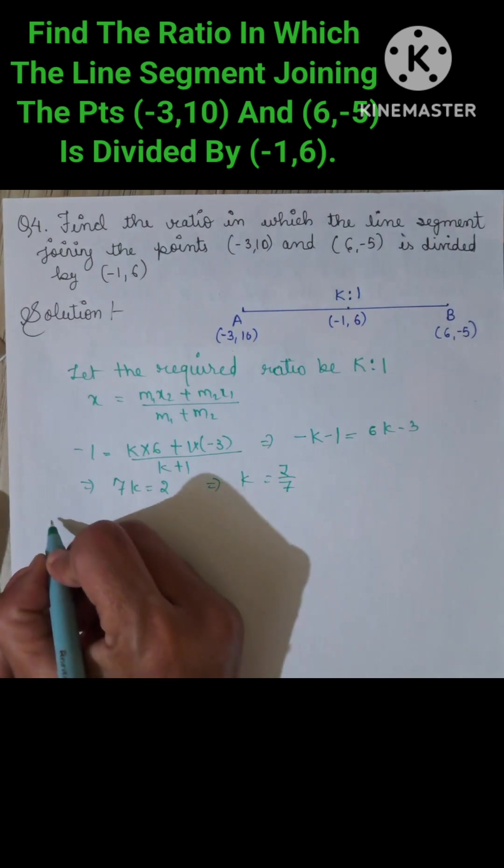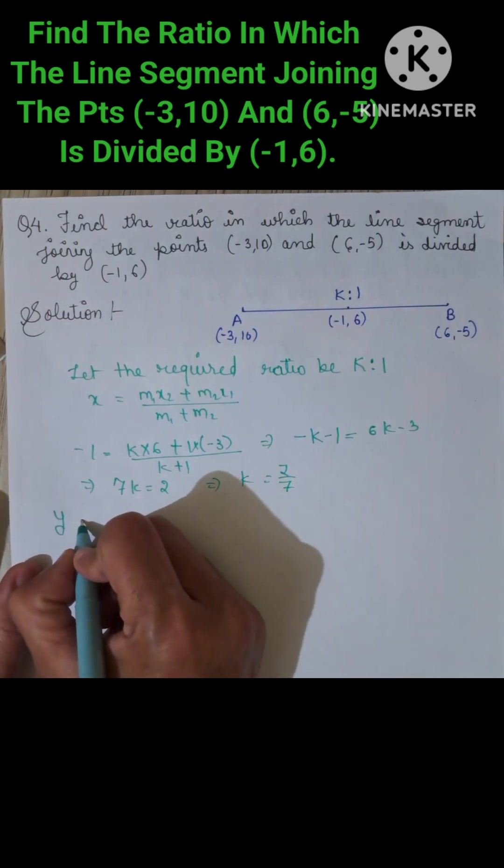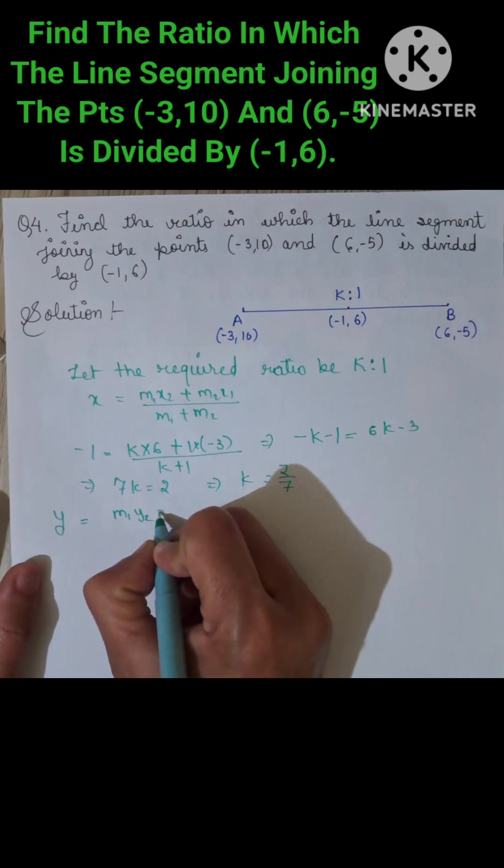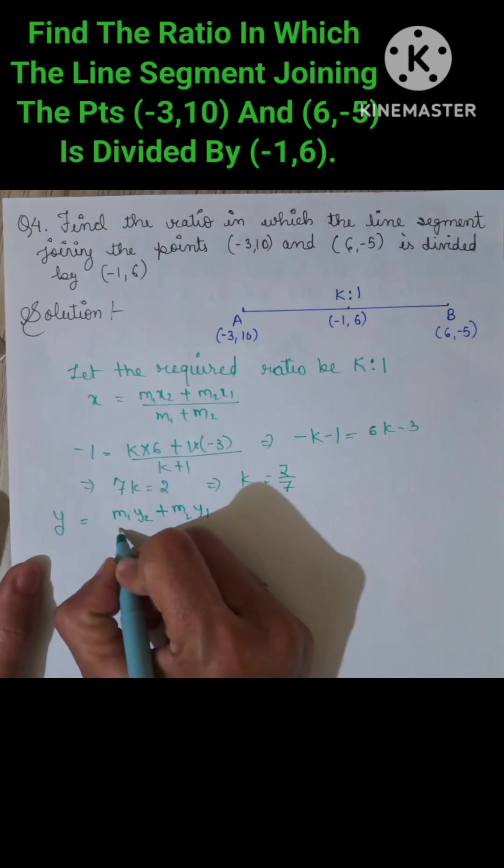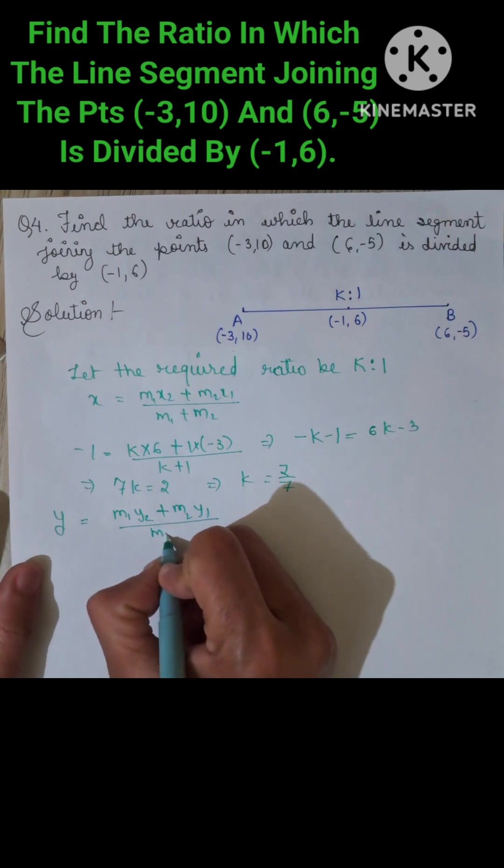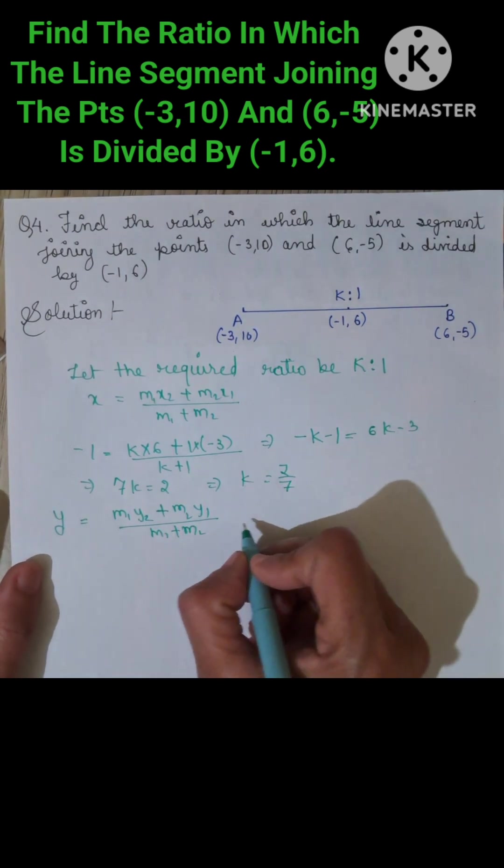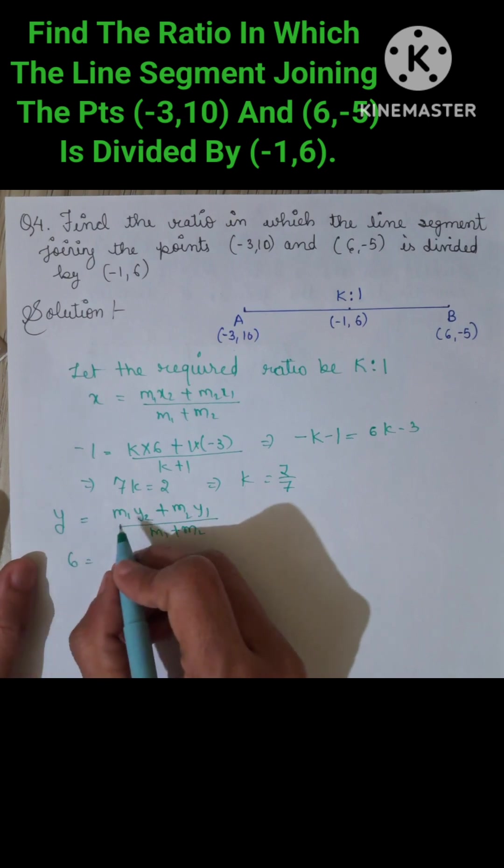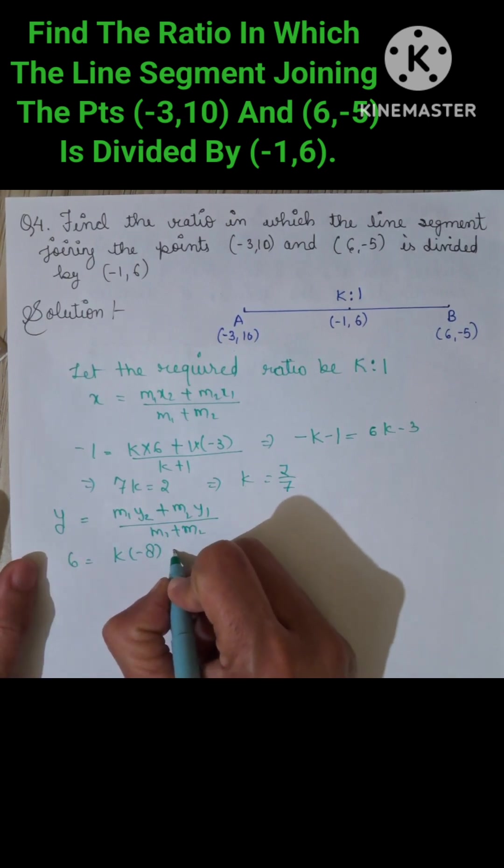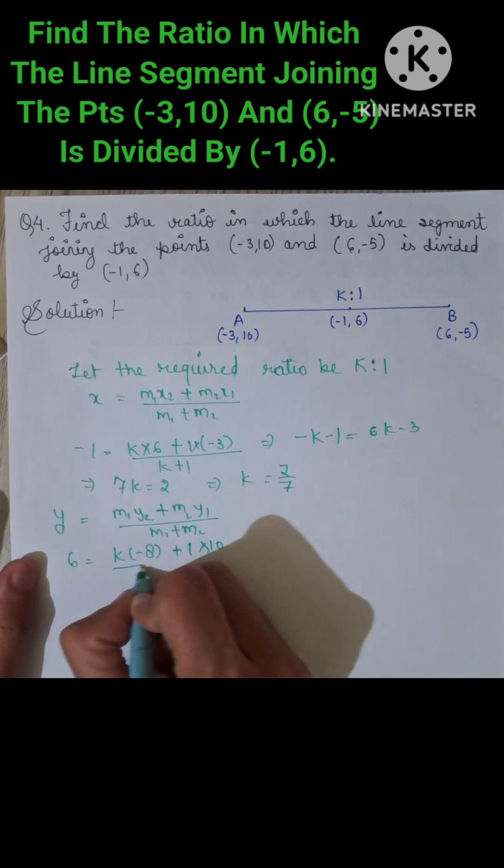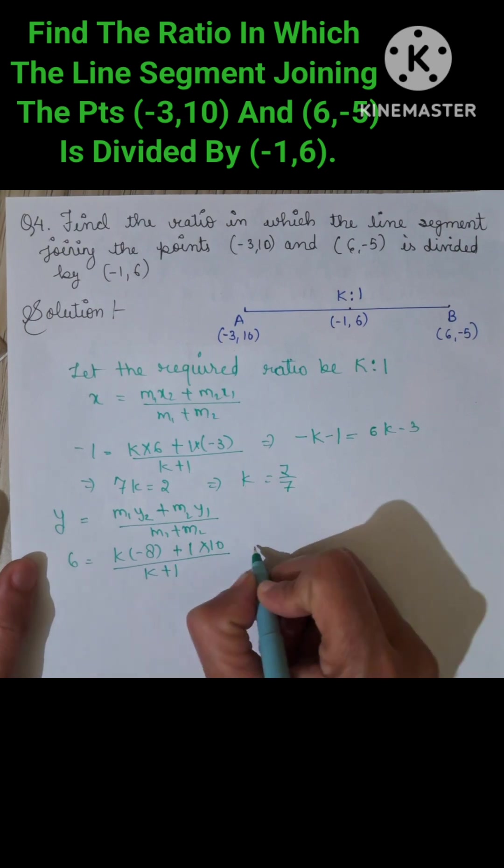Now we verify using the y-coordinate. Using the section formula, y equals (M₁Y₂ + M₂Y₁) divided by (M₁ + M₂). Substituting the values, 6 equals (K × (-8) + 1 × 10) divided by (K + 1).